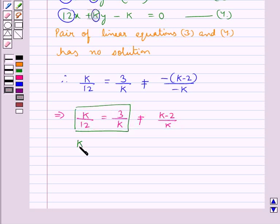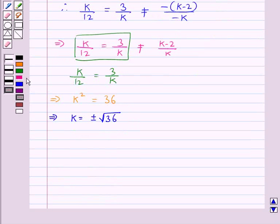This means we have k square is equal to 36. This gives us k equal to plus minus square root of 36. Or, you can say that k is equal to plus minus 6.